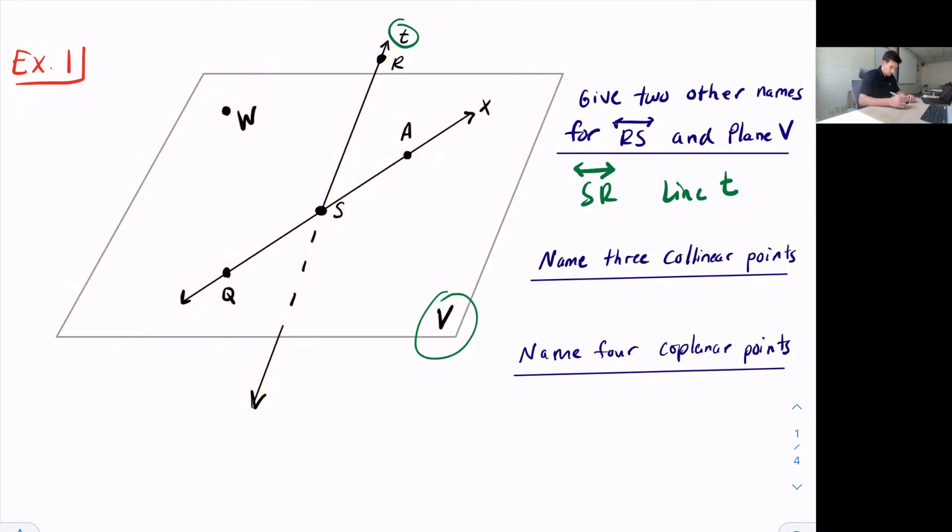Now they tell us to name three collinear points. So collinear means points that are on the same line. So we can say that would be points Q, S, and A.